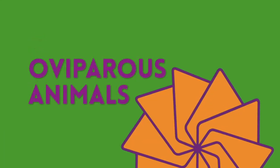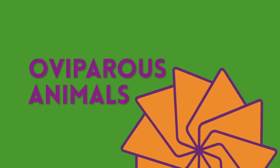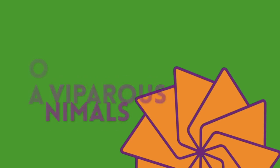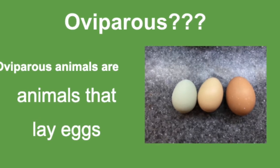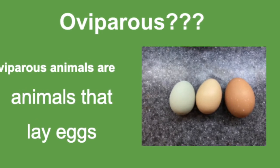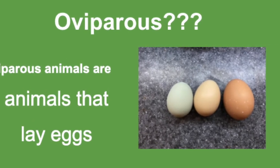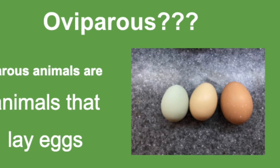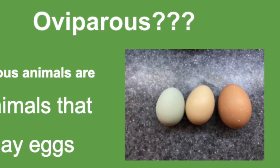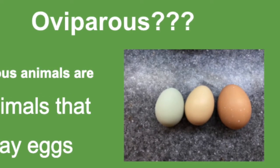Hey, I'm Brooke from the Chattanooga Public Library, and today we're going to talk about oviparous animals. What does oviparous mean? Oviparous animals are animals that lay eggs. Here are some examples of some of the animals that you might know that lay eggs.